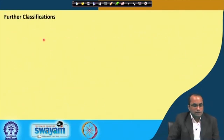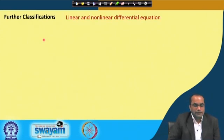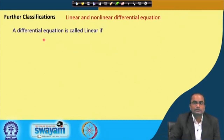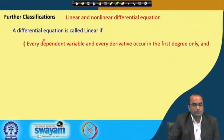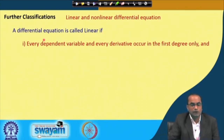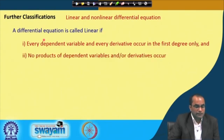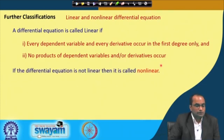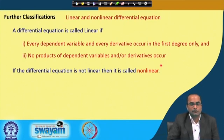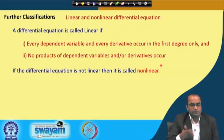Further classifications include linear and non-linear differential equations. A differential equation is called linear if every dependent variable and every derivative occurs in the first degree only — meaning no product or power of the dependent variable or derivatives occurs. If the differential equation is not linear, we call it non-linear. In the non-linear case, the product of the derivative or the dependent variable with the derivative will exist.